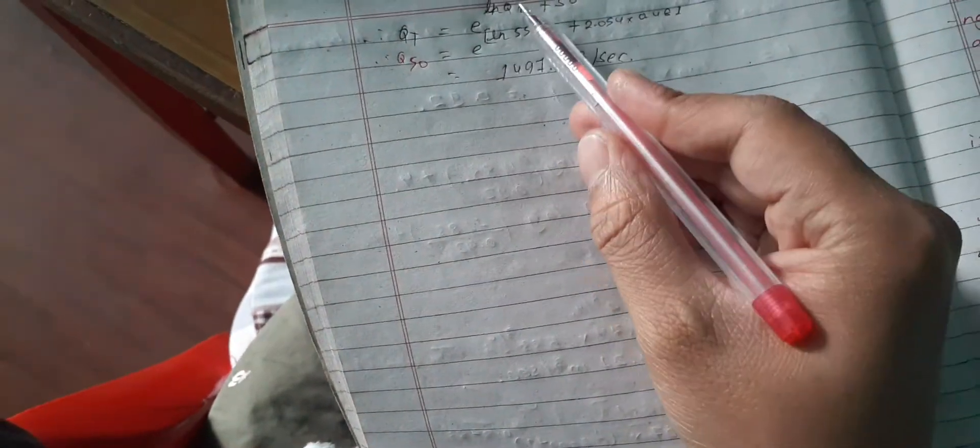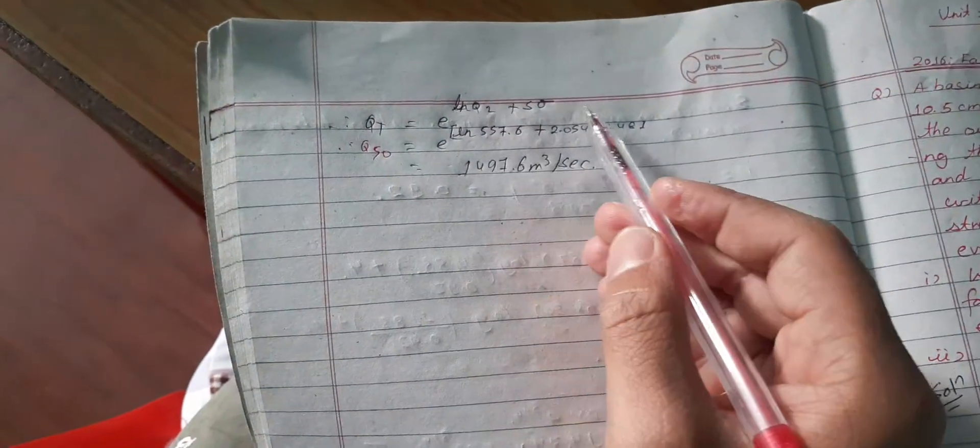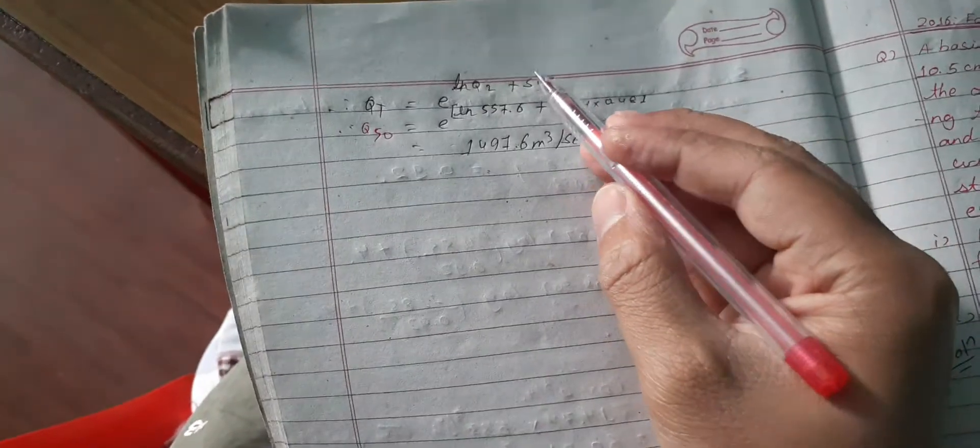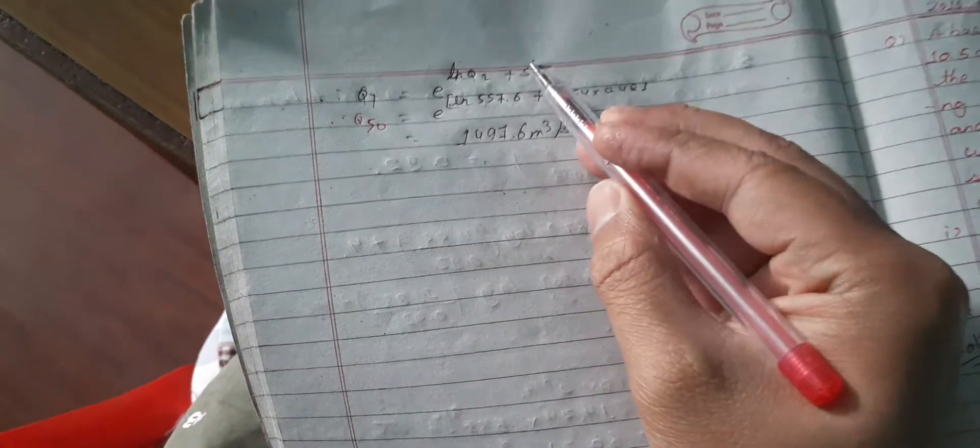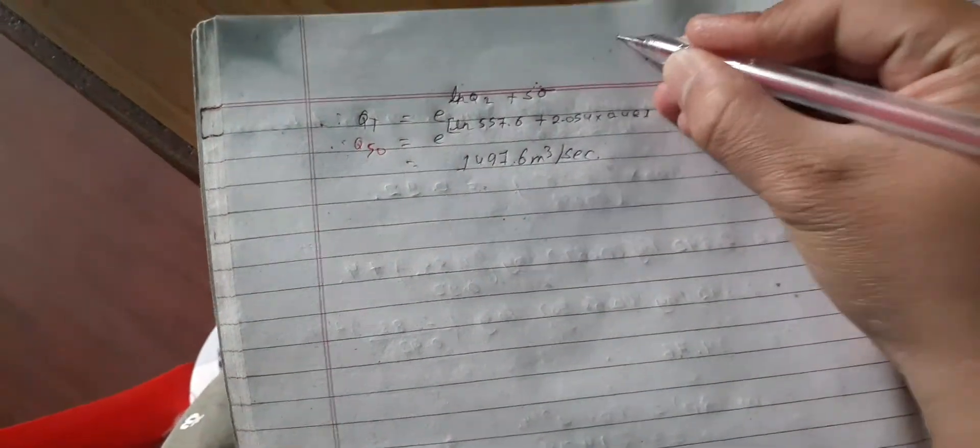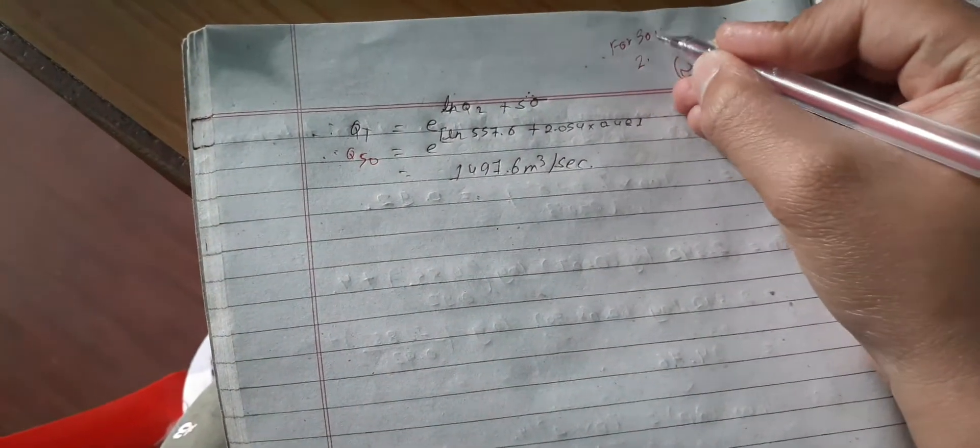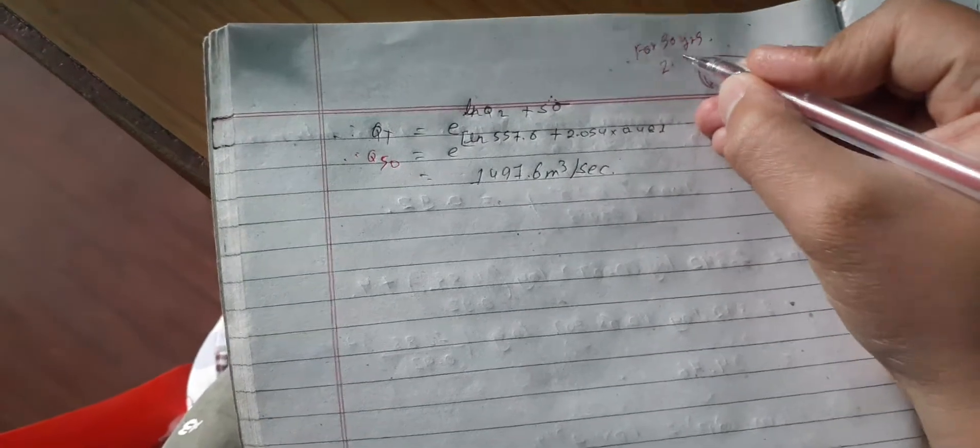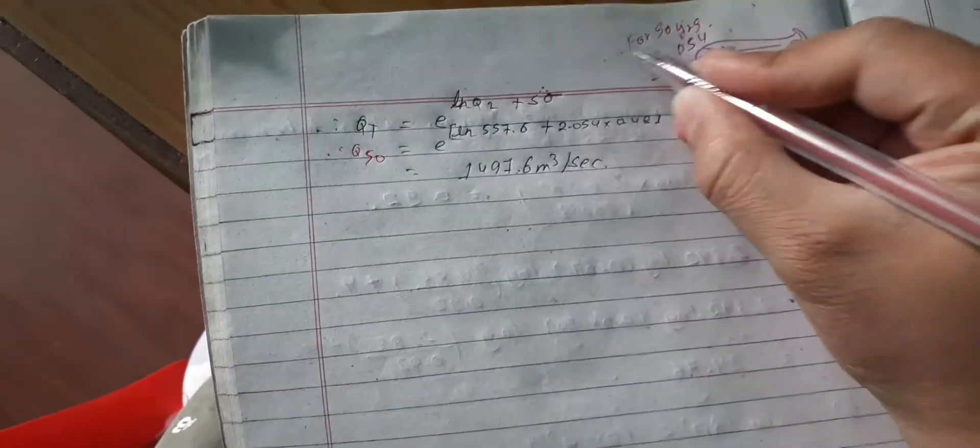For Q₅₀, because the question asks for 50 years return period, we get 50 years return period. We have already got the value of Q₂, sigma also we have already found above. And now we have S value, the S value for 50 years return period is 2.05.